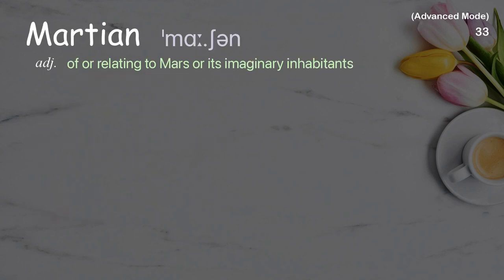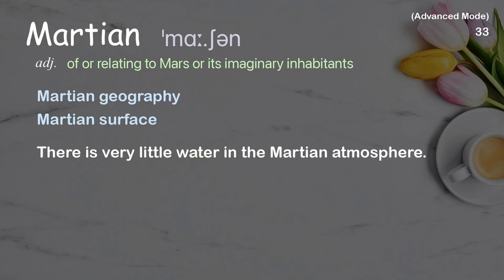Martian: of or relating to Mars or its imaginary inhabitants. Examples: Martian geography, Martian surface. There is very little water in the Martian atmosphere.